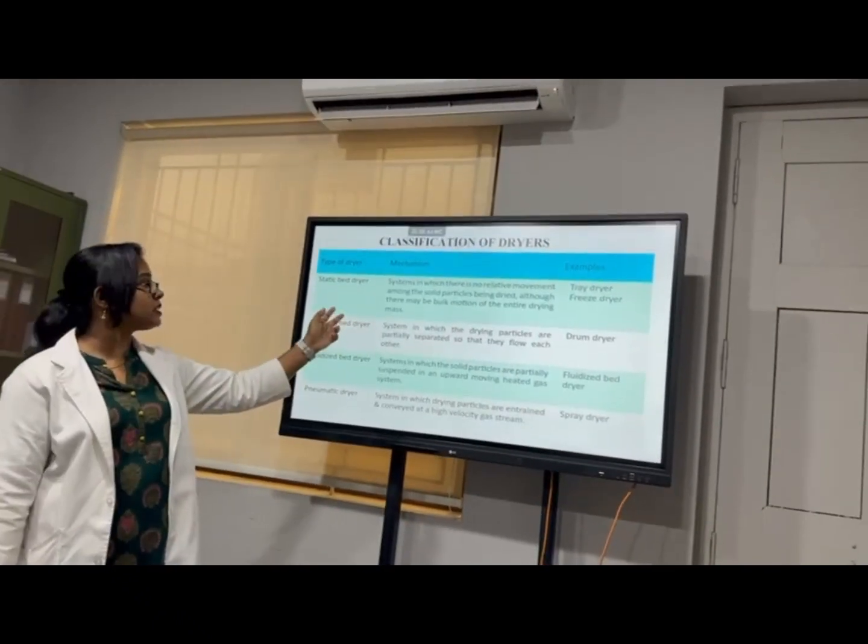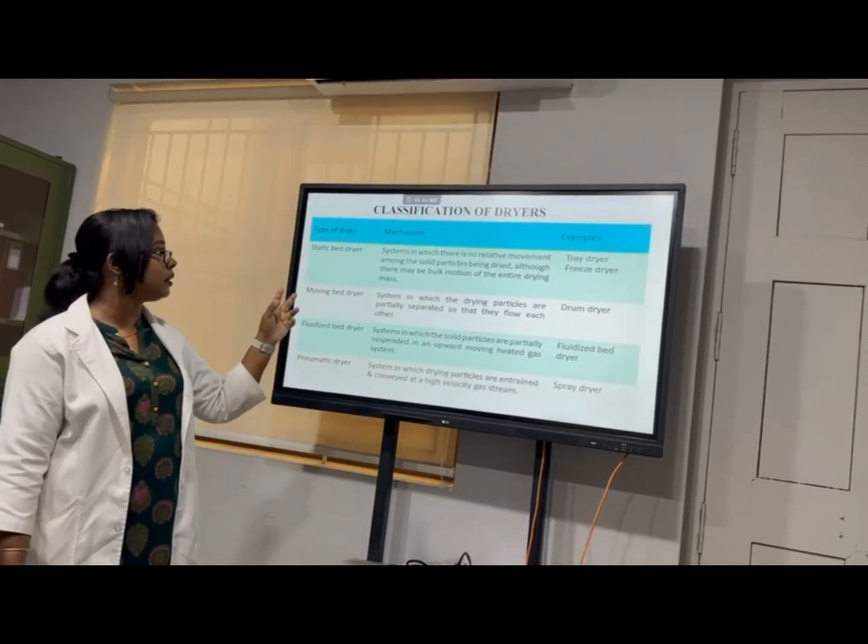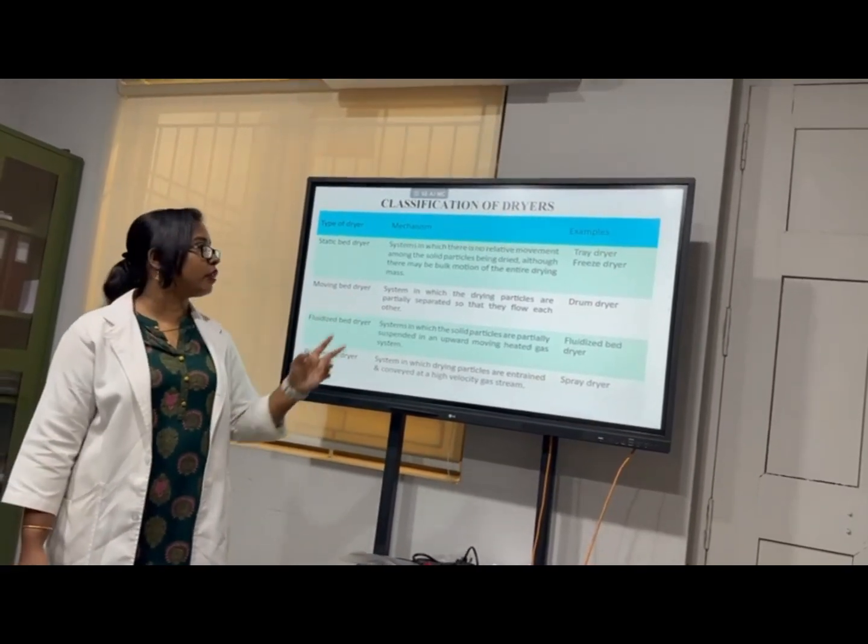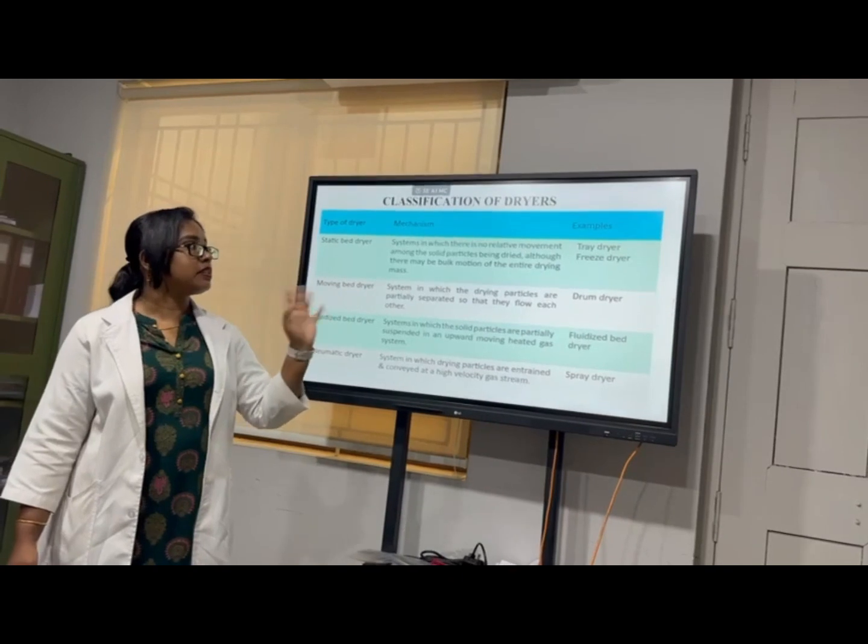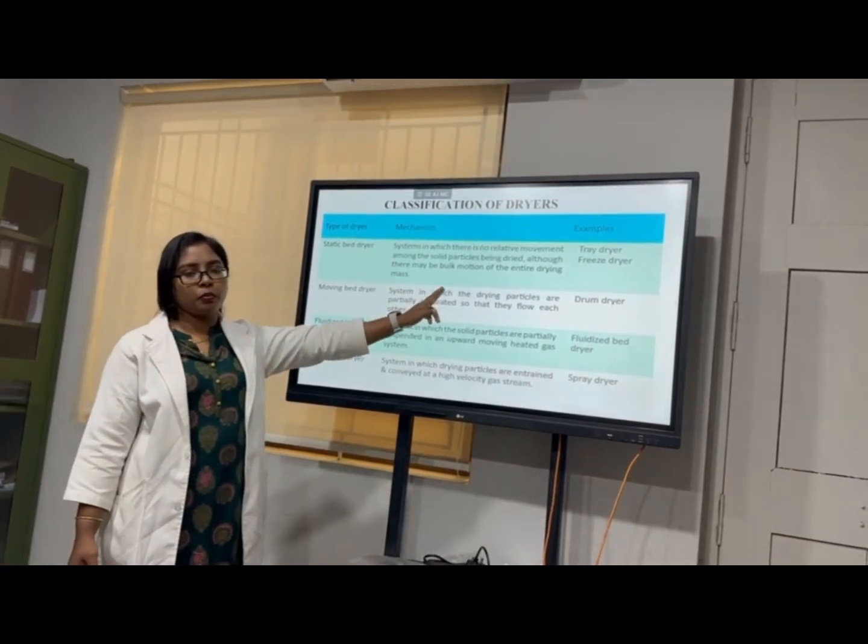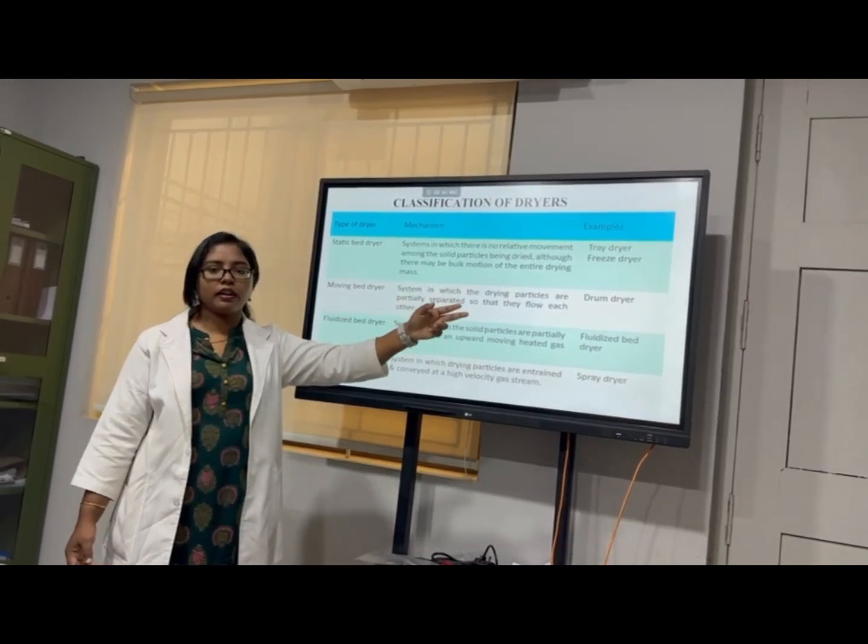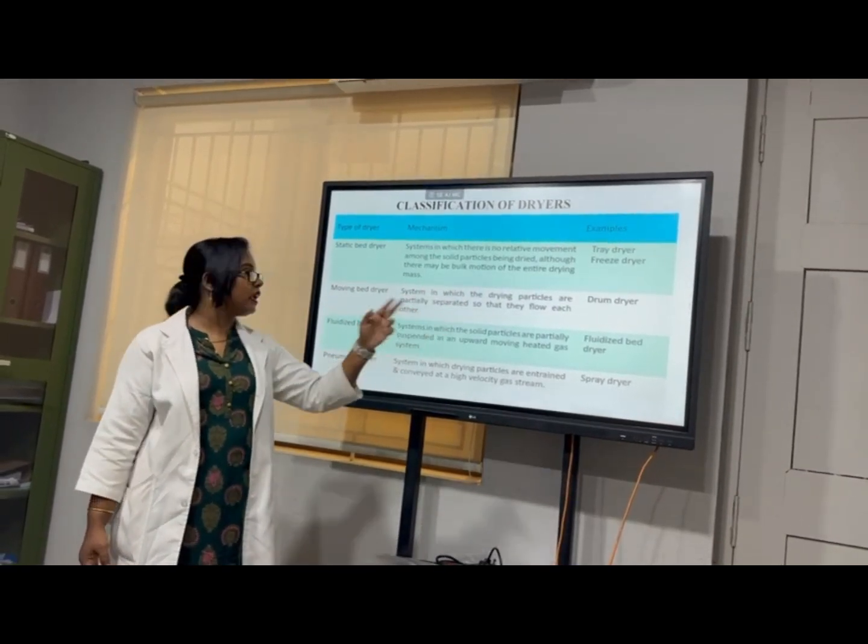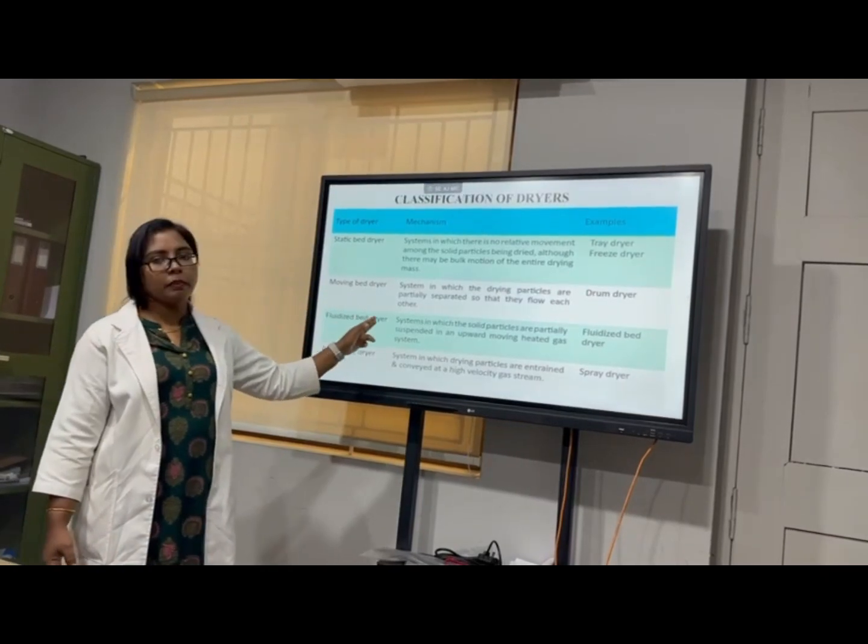Here the mechanism is the system involved. There is no relative movement on the solid particles being dried. The example is spray dryer. In this static mix there is no relative movement. This type of dryer example is the spray dryer and the freeze dryer. The second one is the moving bed dryer.